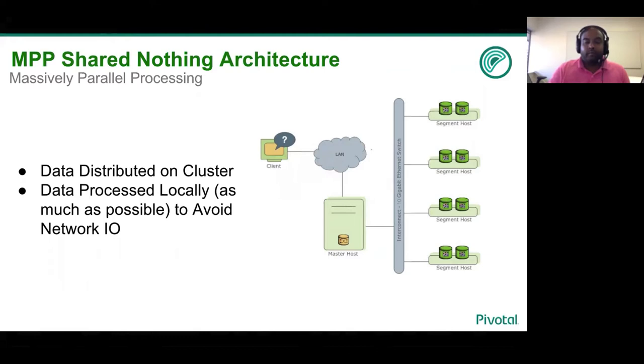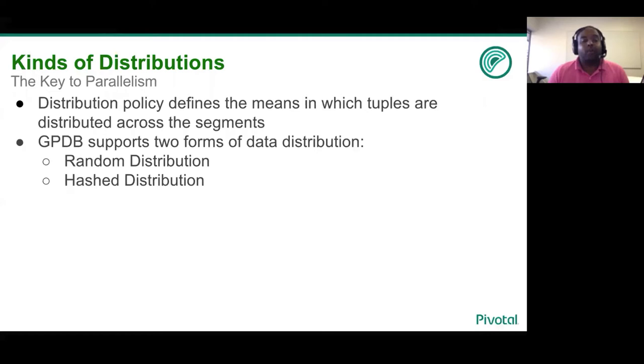The kinds of distribution that GPDB supports are of two forms, random distribution and hash distribution. Distribution is the policy in which the tuples of your table are chunked up and placed on different segments.